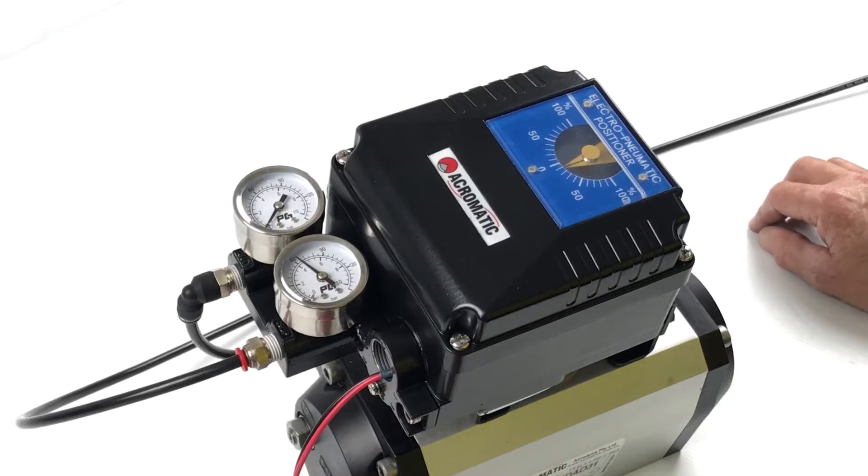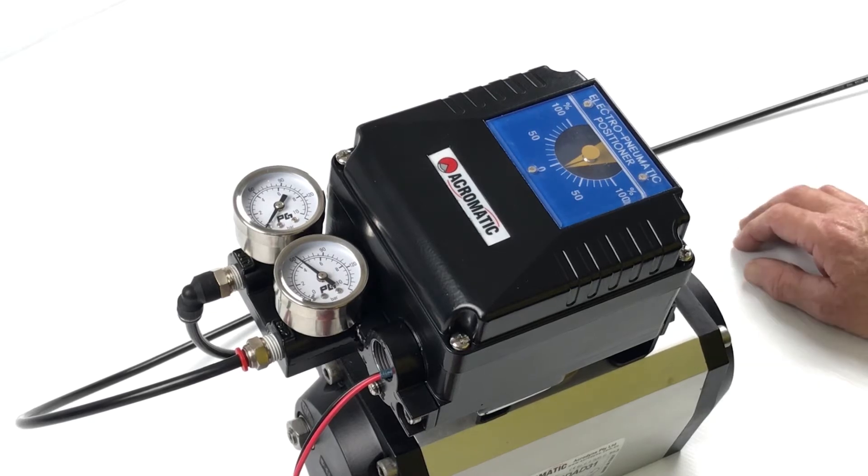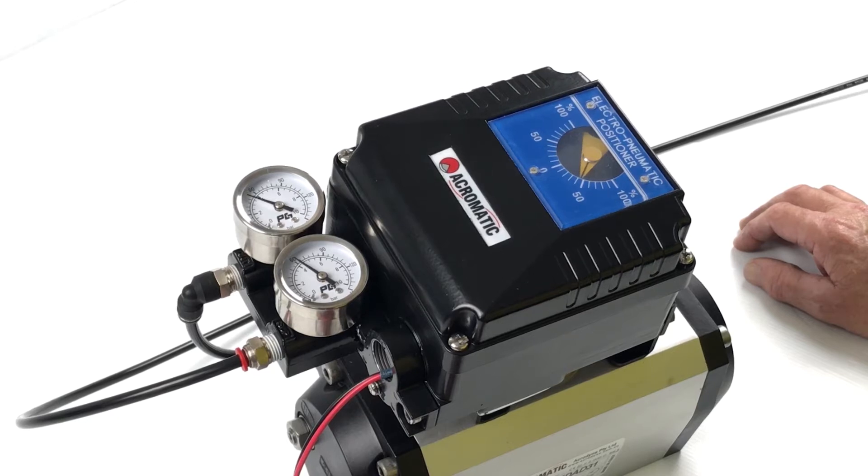This is an acromatic electro-pneumatic positioner. First we'll check the position of where it is at the moment. We're putting a 4-20mA signal. This one's quite close but not quite accurate.